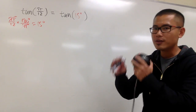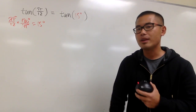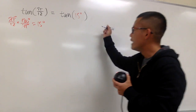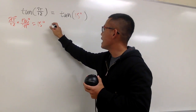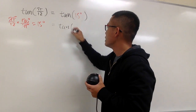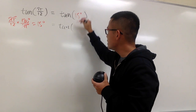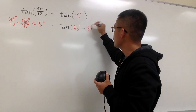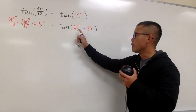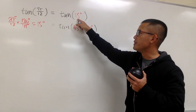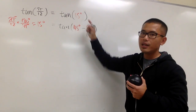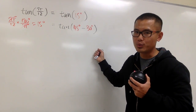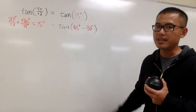We can use 45 minus 30, or maybe 60 minus 45 — up to you. Let's write tangent of 15 degrees as tangent of 45 degrees minus 30 degrees. You can also use 60 degrees minus 45 degrees; it will be the same answer at the end.